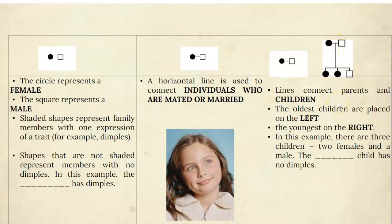Lines connect parents and children. This line right here is connecting the parents to the children. When we read a pedigree we always look left to right, and the individual on the farthest left is the oldest while the individual on the right is the youngest. In this example there are three children — two females, both shaded in, so they have dimples — and one individual who is not shaded, so that child has no dimples.